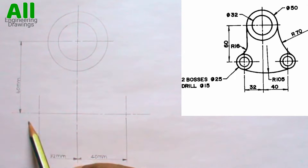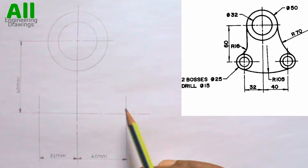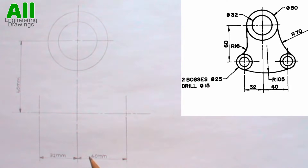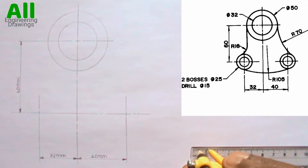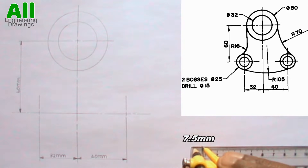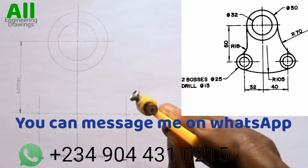There is a circle here of diameter 15mm and a circle here of diameter 15mm, which means the radius is 7.5mm, because 15 divided by 2 is 7.5. So I will adjust my compass to a radius of 7.5mm. Then I will draw the circles.